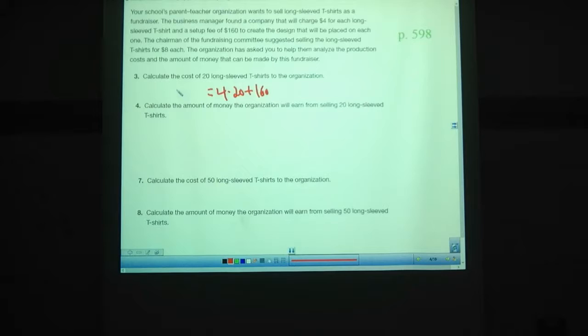$4 a shirt is actually pretty cheap. $4 times 20, that is $80. $80 plus $160, $240. Calculate the money we'll earn from selling those. So $8 per shirt, $8 times 20, $160. You might notice the amount we made from selling it is less than the amount we spent buying them. That's bad. That means we're losing money on that. We're losing $80 there.